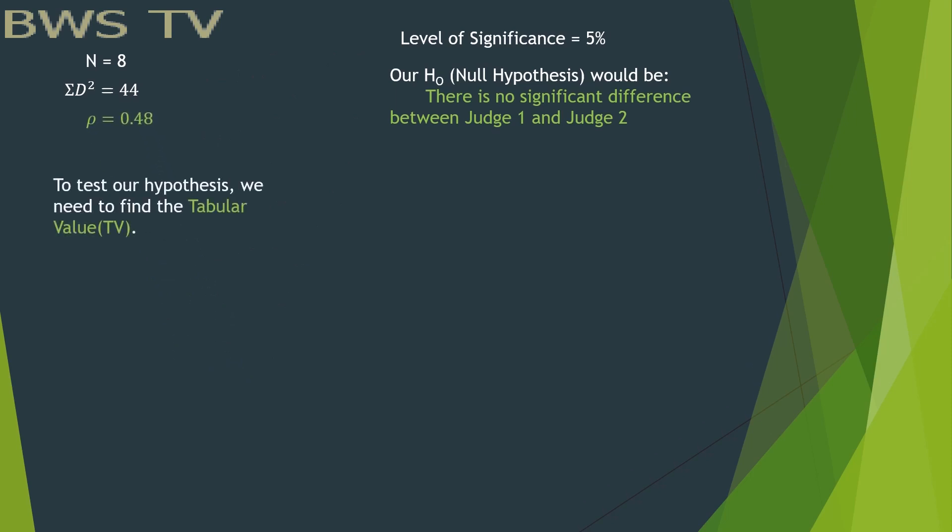To test our hypothesis, we need to find the tabular value. For Spearman, to find the TV, we use degrees of freedom, n minus 2. Our DF is 6.